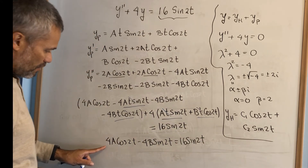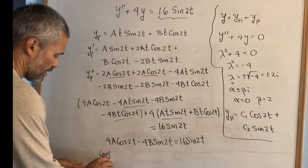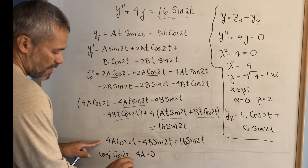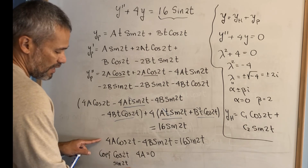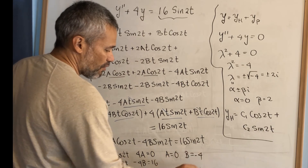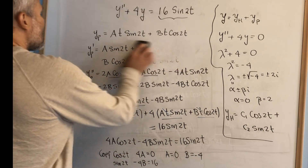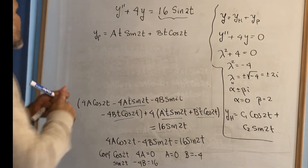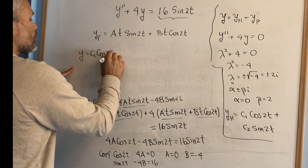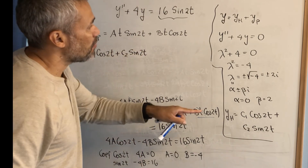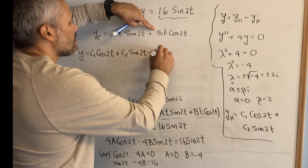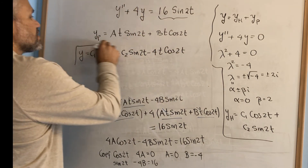We need to find two unknowns, so we set up two equations. The coefficient of cosine of 2t on the left is 4a, and on the right is 0. The coefficient of sine of 2t on the left is negative 4b, and on the right is 16. That means a is 0 and b is negative 4. So the general solution is: c1 cosine of 2t plus c2 sine of 2t, plus the particular solution — since a is 0 and b is negative 4, that is minus 4t cosine of 2t. This is the general solution.